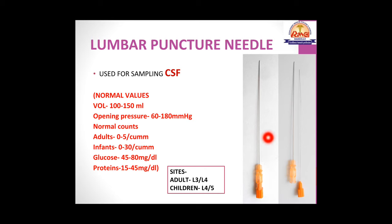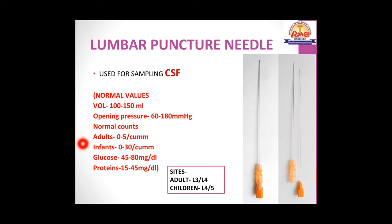The lumbar puncture needle has a stylet and is used for CSF sampling. Normal CSF values: volume 100–150 mL, opening pressure 60–180 mmHg, cell count in adults 0–5 per cubic mm, in infants 0–30 per cubic mm, glucose 45–80 mg/dL, and protein 15–45 mg/dL. Lumbar puncture is performed between L3 and L4 in adults, and between L4 and L5 in children.